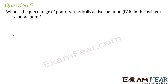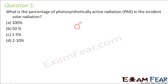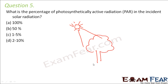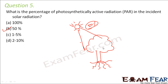Question number five: what is the percentage of photosynthetically active radiation in the incident solar radiation — 100%, 50%, 1 to 5%, or 2 to 10%? Not all solar radiation coming from the sun is photosynthetically active — only 50 percent of it is PAR. So the answer is 50 percent. However, plants absorb only 2 to 10 percent of that photosynthetically active radiation.